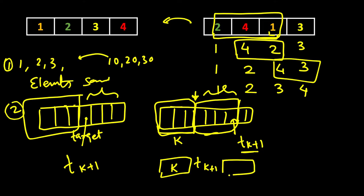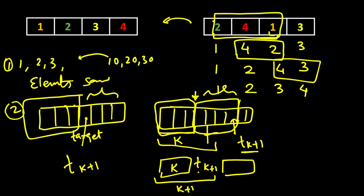After reversing, we now have k+1 elements in the correct position. t[k+1] was required at that position and it has come there, with the remaining elements following. We then do the same thing for the remaining part. By repeatedly selecting one subarray and reversing it, we can keep increasing the number of elements in the correct position. So we can always convert arr to target if both have the same elements.